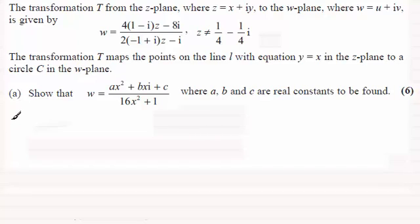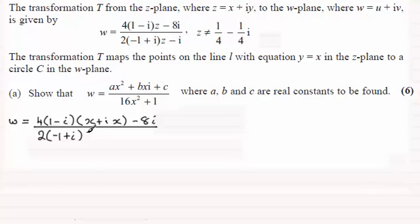So let's start then by just saying that w will equal, and we've got 4 times 1 minus i times z. So in place of z then I'm just going to write x plus ix. And then we've got minus 8i. And then all of this is divided by 2 times minus 1 plus i. And then we've got z again. So that's just going to be x plus ix. And then we've got minus i.